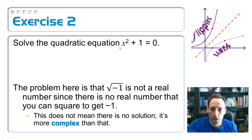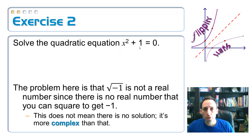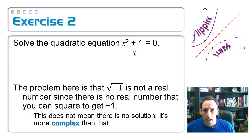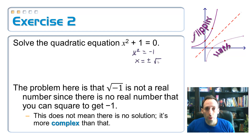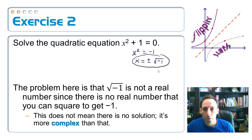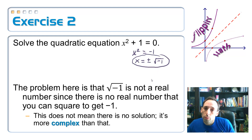In the last lesson we talked about solving quadratic equations by taking a square root, and we should be able to do that here. Just subtract the 1 over: x squared equals negative 1. Now take the square root of both sides, and x is equal to plus or minus the square root of negative 1.